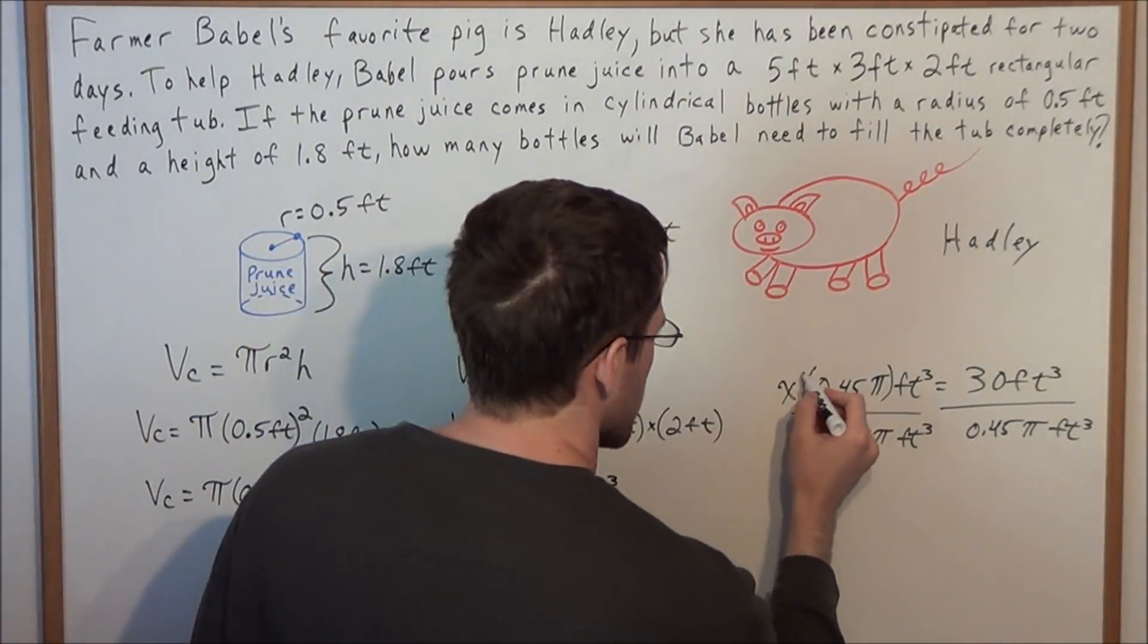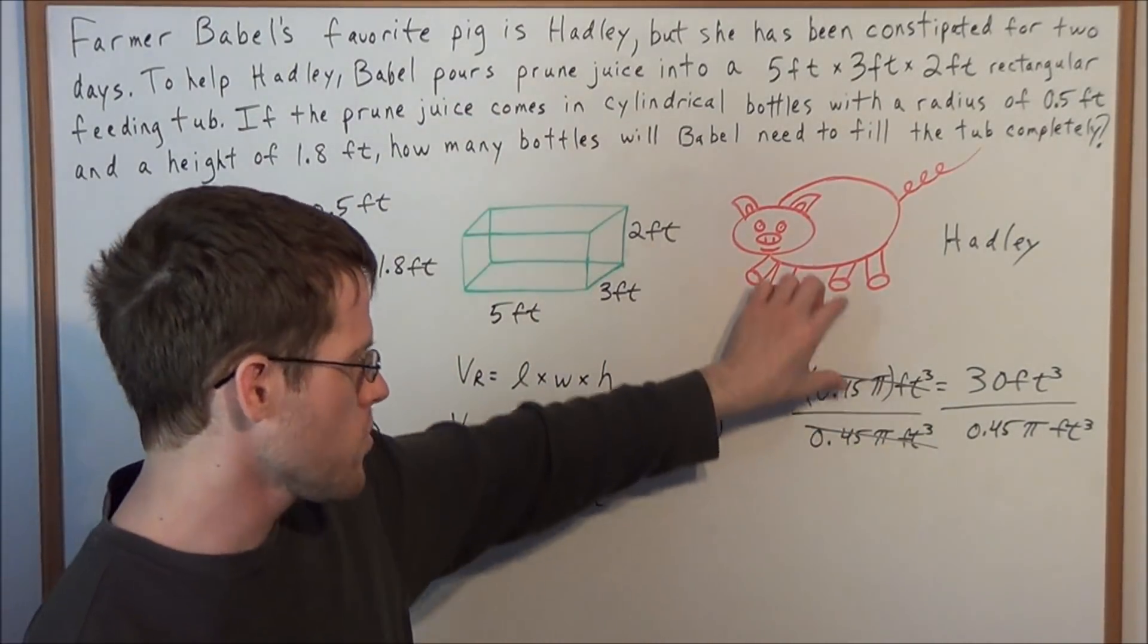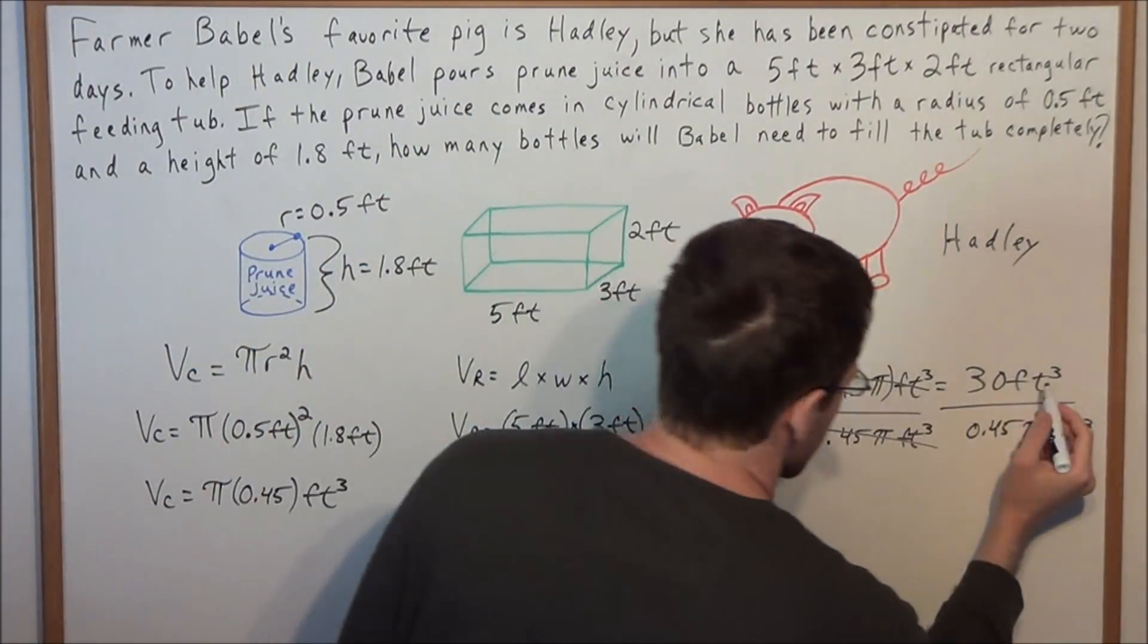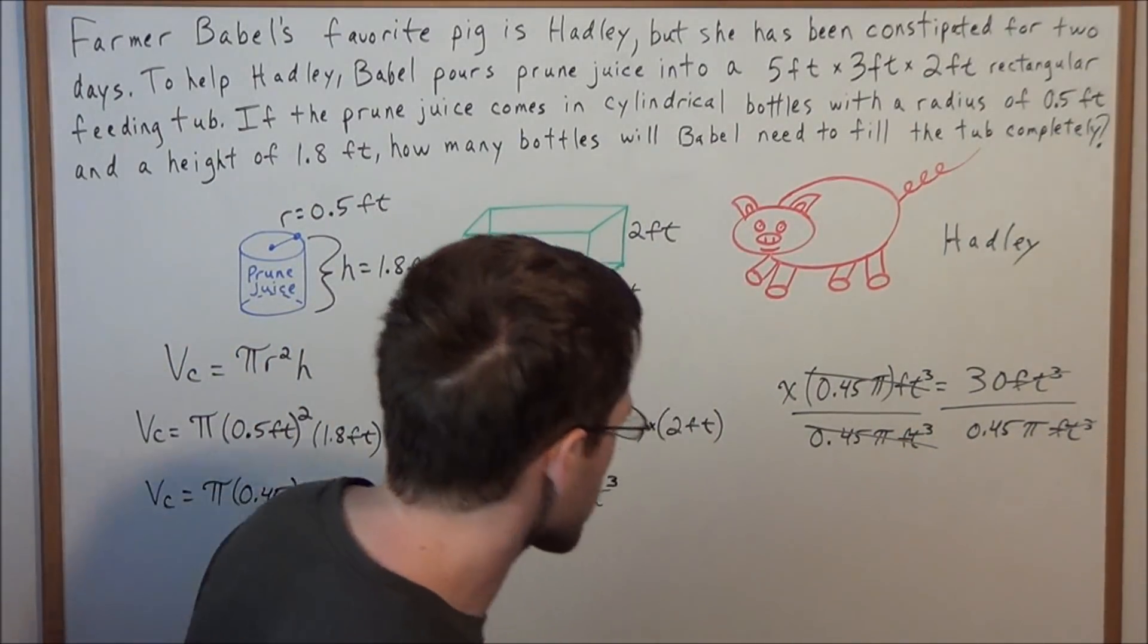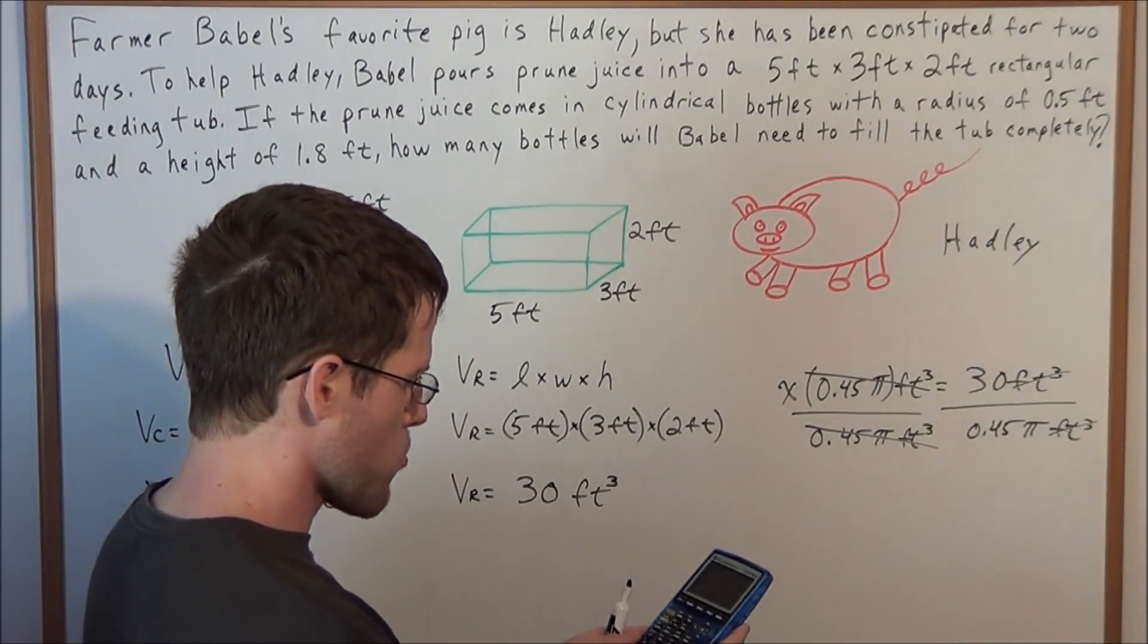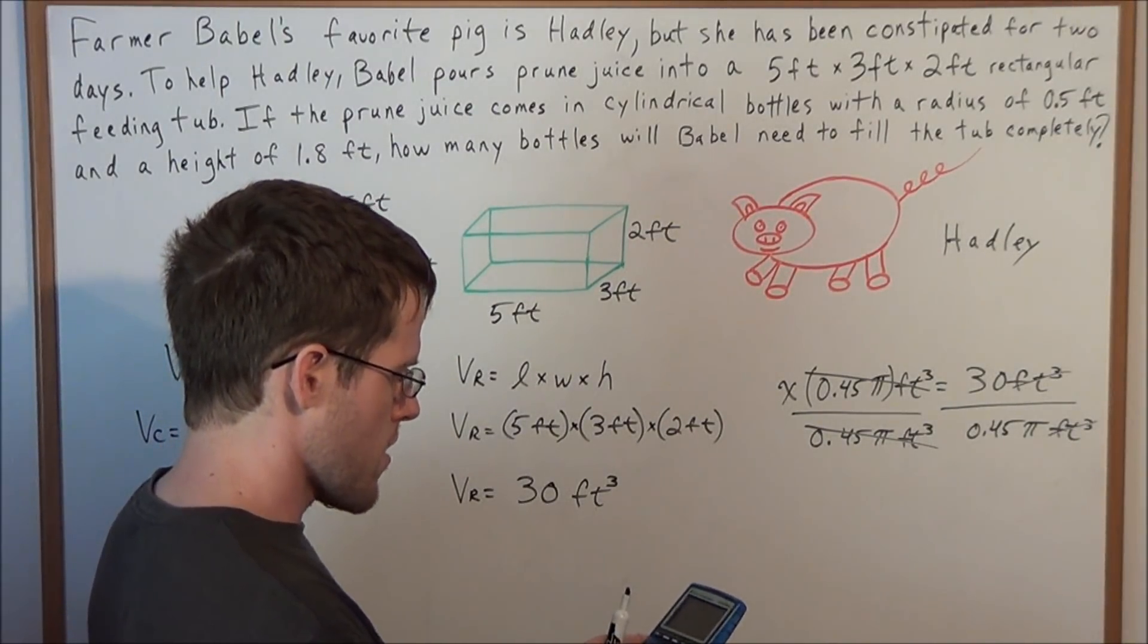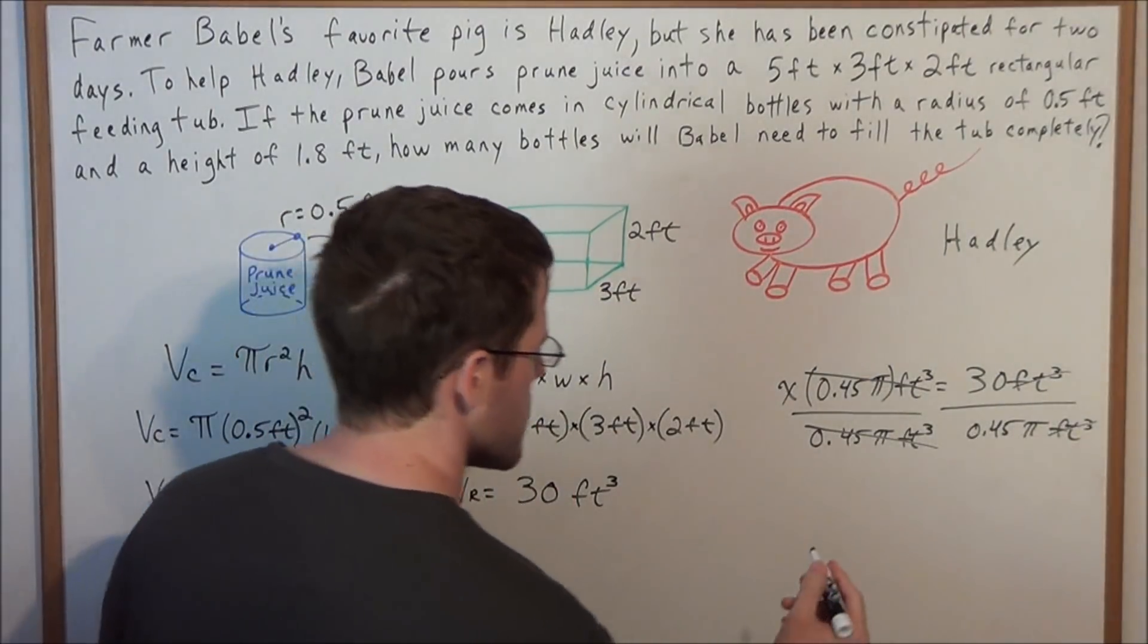And now on the left-hand side, 0.45 pi cubic feet will cancel. And now on the right-hand side, cubic feet will cancel. And now what we need to do is, in our calculators, we need to do 30 divided by, and I would put parentheses, 0.45 pi. And you should get 21.22.